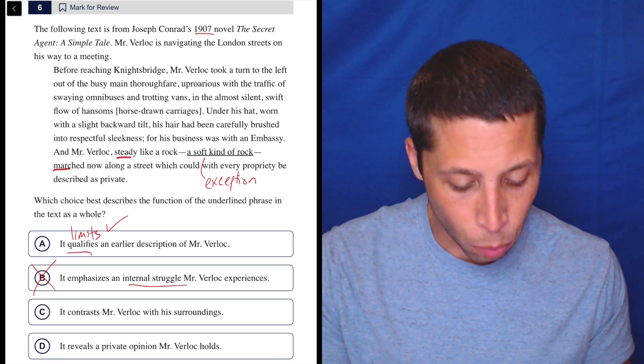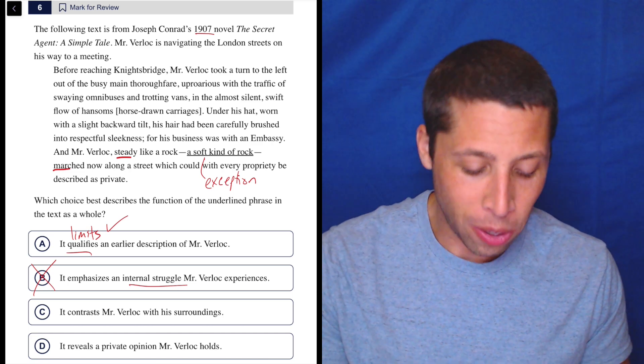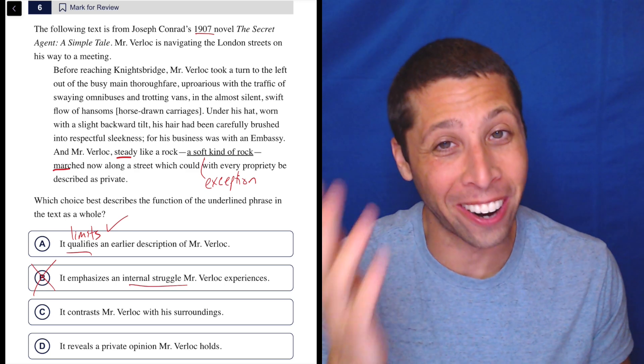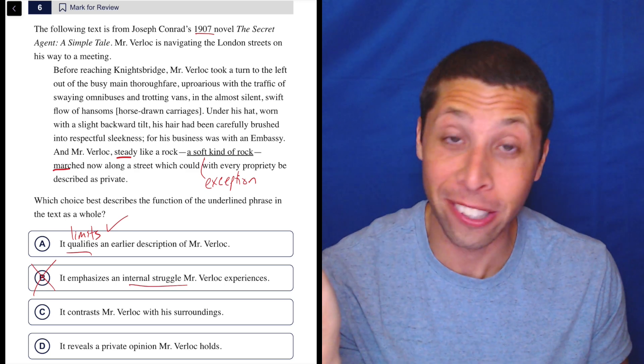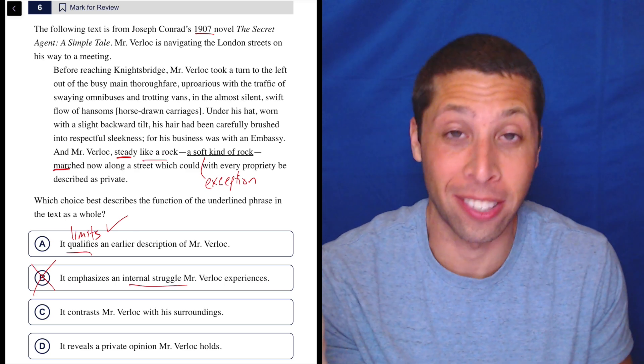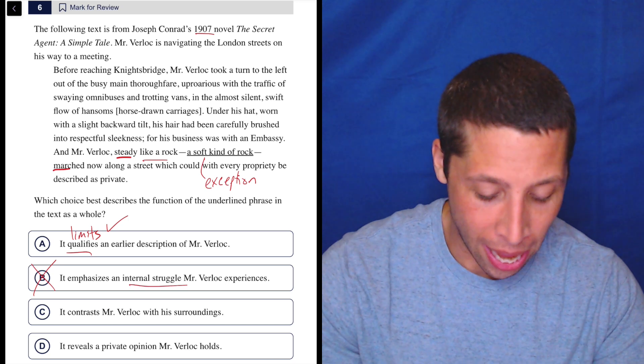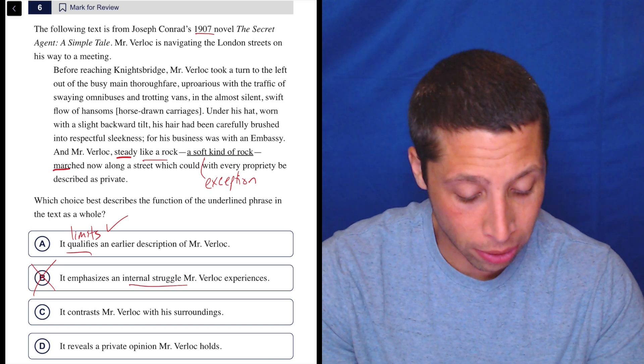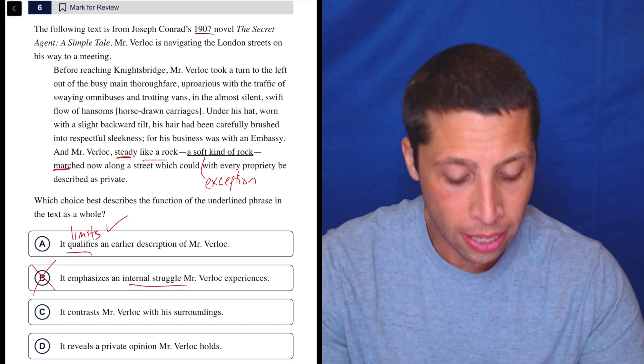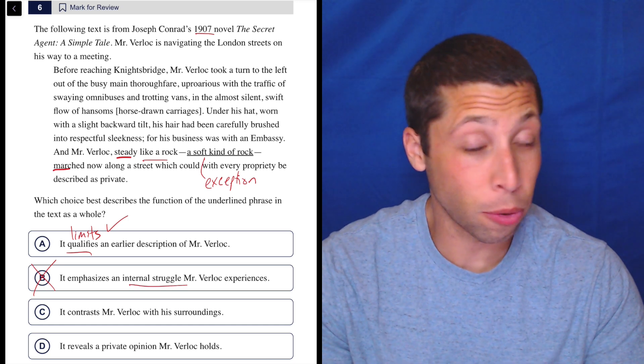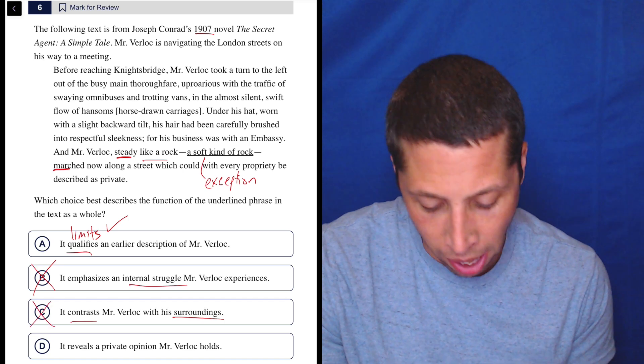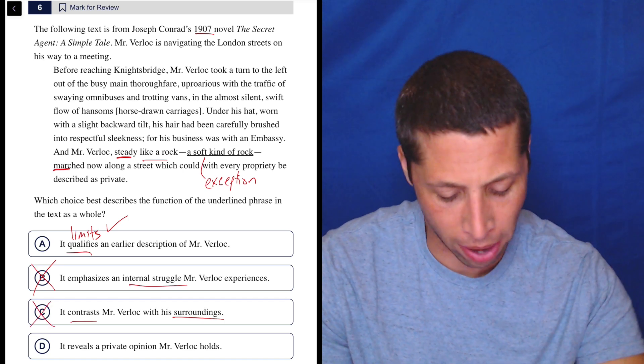C, it contrasts Mr. Verloc with his surroundings. Well, he's not surrounded by a rock. That part's a metaphor. That part you're allowed to be like, okay, they're using it like a rock. It's a simile, literally. And so I don't know what - are they saying that his surroundings are hard in some way? They're saying he's steady like a rock. So those aren't his surroundings either. So this, again, they're not really - there's no contrast here, or at least not the contrast with his surroundings.